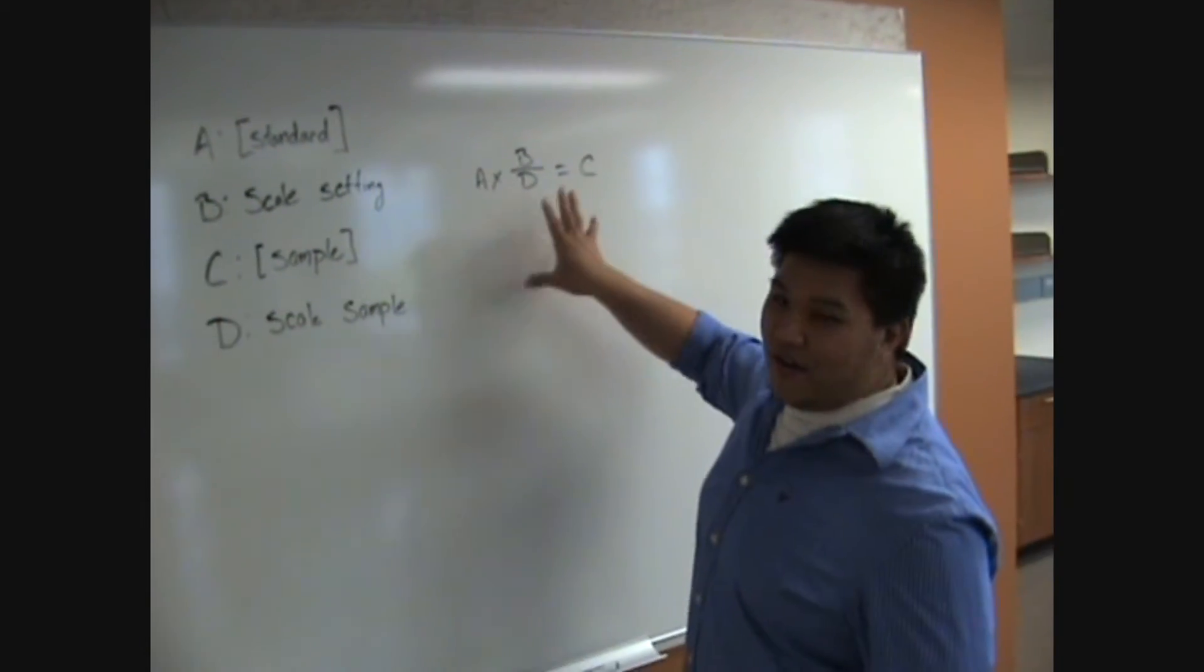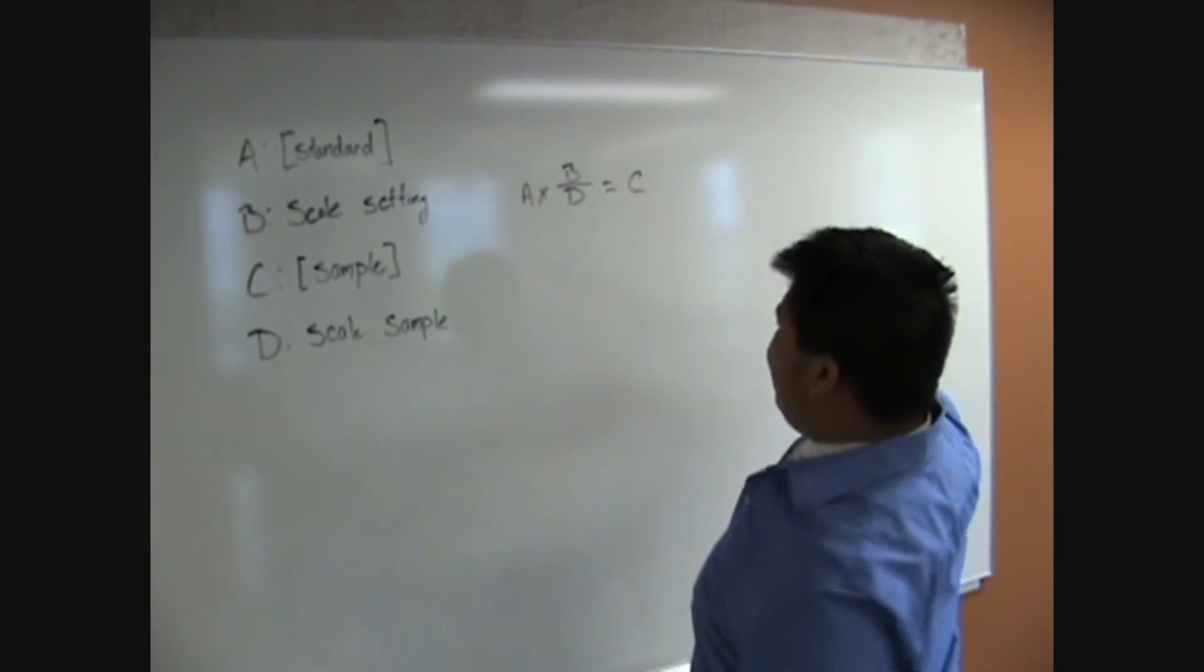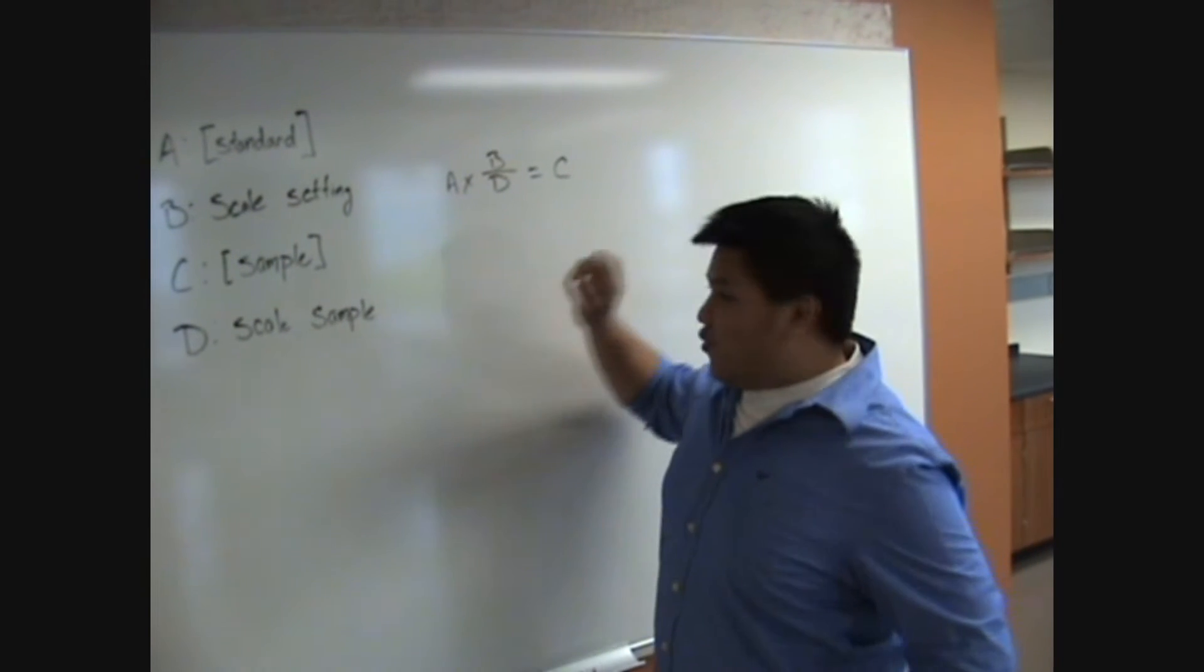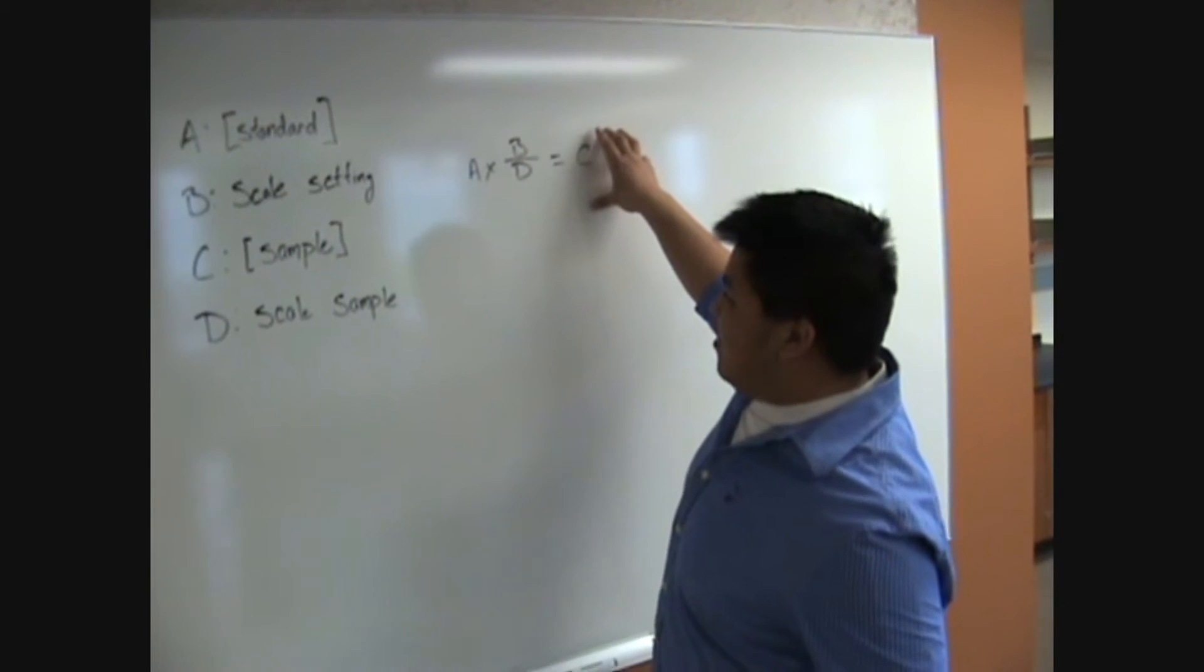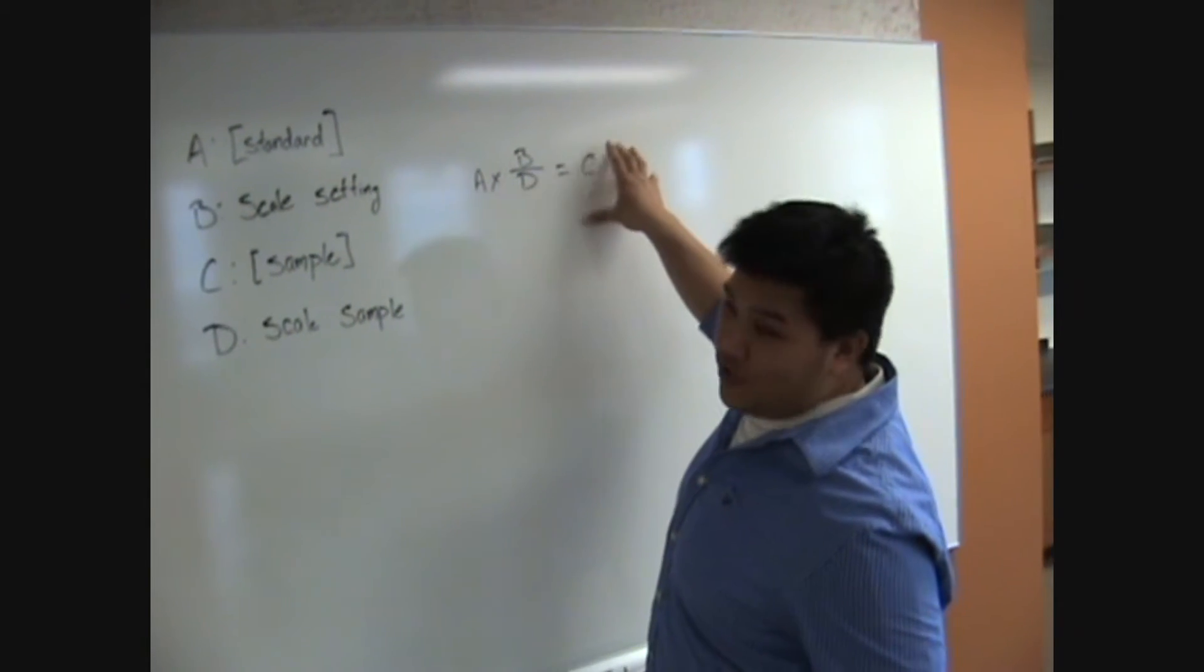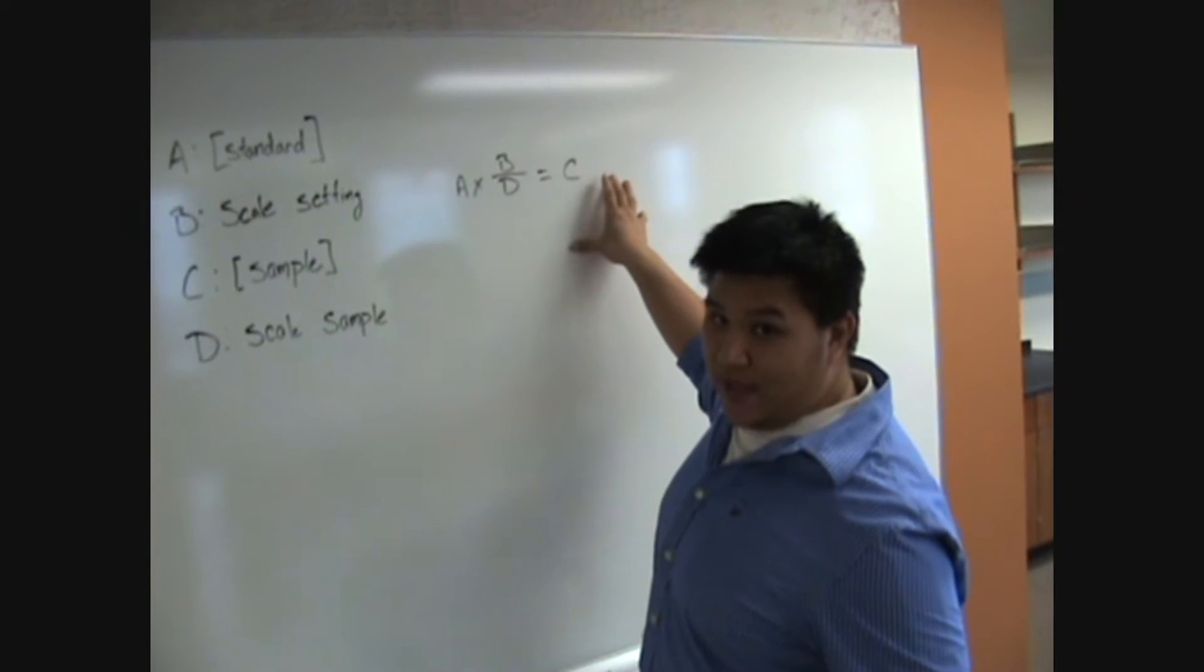If you do all the math, all the conversions in the units will cancel out and give you a concentration. And the concentration will be 5 grams per liter.